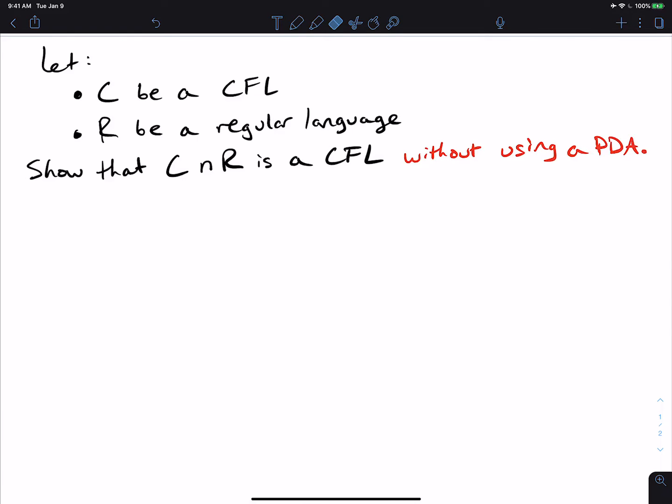All right, I have a really cool problem for you today. So here we're going to look at the problem of supposing that C is a CFL, so a context-free language, and R being a regular language. And what we're going to do today is show that C intersection with R is a context-free language.